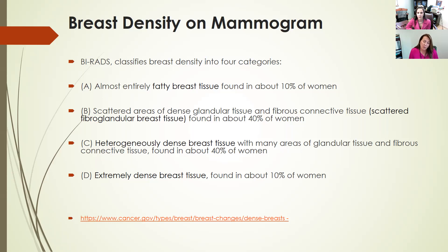Category C is where we start getting into dense breasts; it's called heterogeneously dense, found in about 40% of women. The breasts are getting more dense here, and it makes it more difficult to pick up a cancer on mammogram. Then we move on to category D, which is extremely dense breasts, found in only about 10% of women. This definitely limits what can be seen.